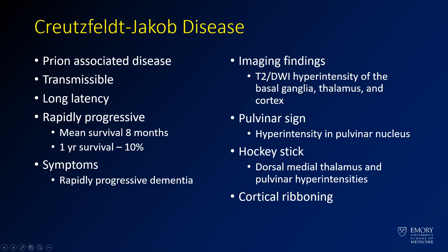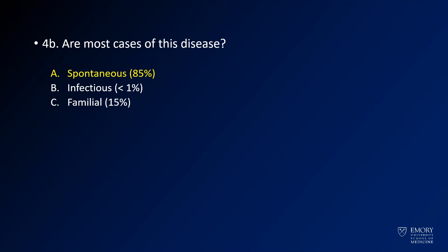The vast majority of these cases are spontaneous, in that the abnormal protein occurs spontaneously and then transmits within an individual person, with very few of them being infectious. Despite the fact that that is what's in the news most commonly, the vast majority of these cases are spontaneous. Some people have a familial protein which is more likely to fold into these abnormal proteins, and that makes up the other 15%.